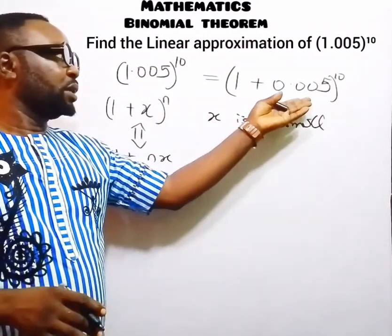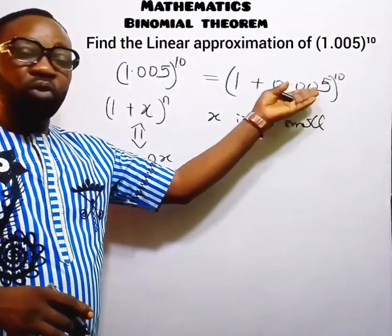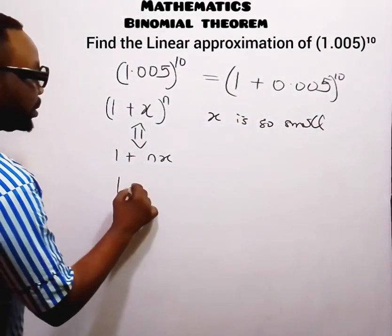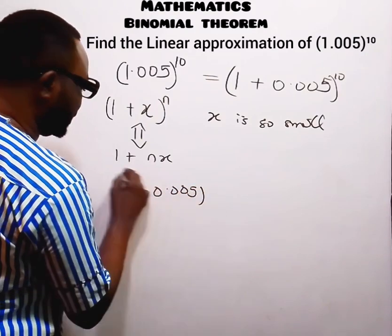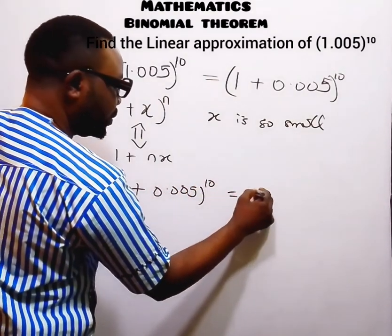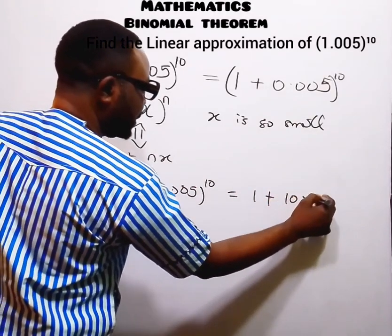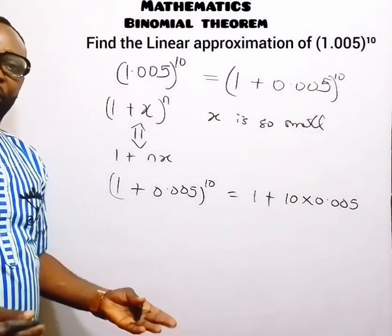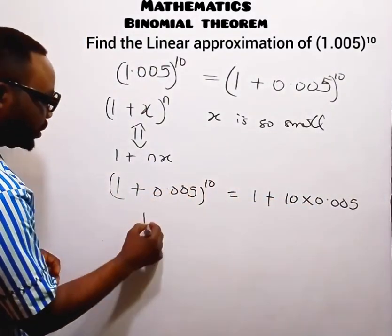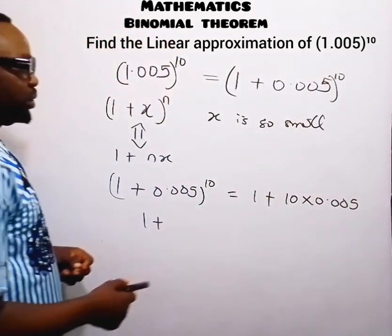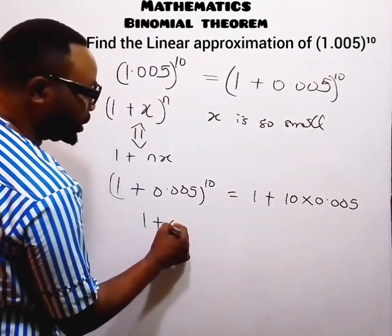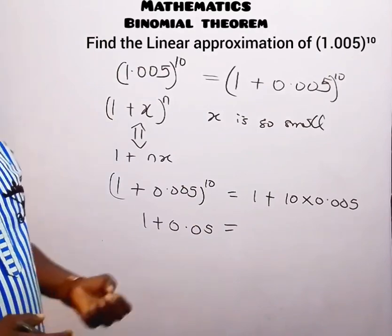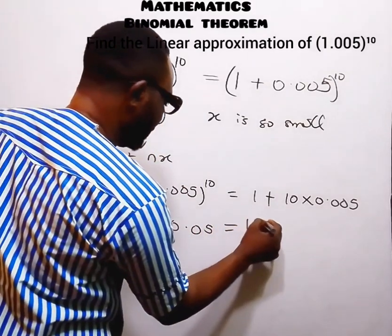Since 0.005 is very small, we can apply our linear approximation. The expression (1 plus 0.005) raised to the power of 10 becomes 1 plus 10 multiplied by 0.005, which equals 1 plus 0.05. So the linear approximation of this expression is 1.05.